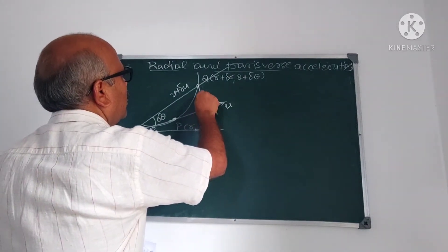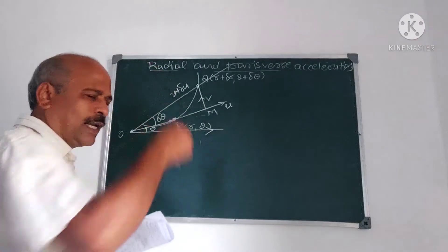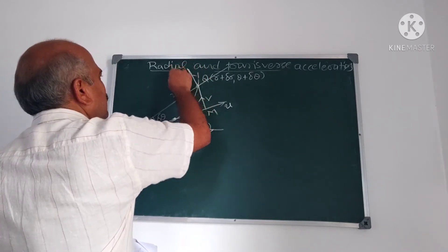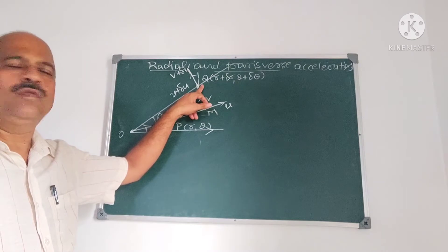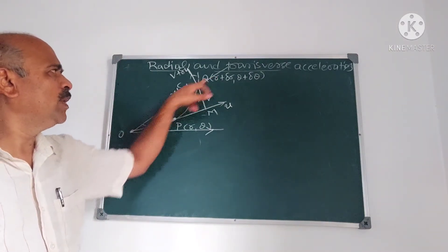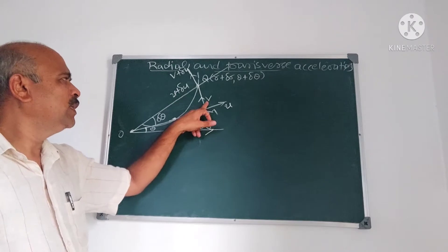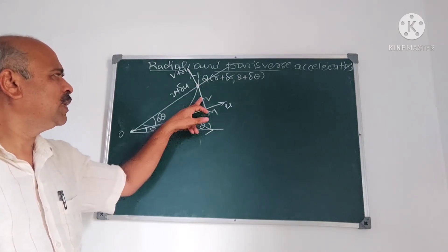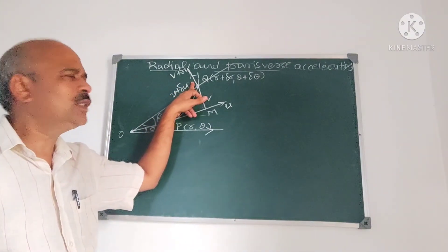U plus delta U is radial velocity at Q. V is transverse velocity — the component of velocity perpendicular to the radius vector at P. V plus delta V is the transverse velocity at Q, that is, the component of velocity perpendicular to the radius vector at Q.